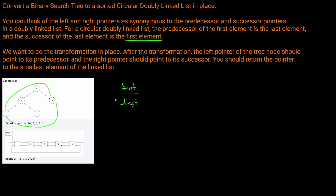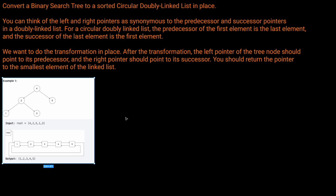We need to have the first and the last elements available to us at all times. When the traversal finishes, the node we're currently working with is the last node, but if we don't track the first node, we'll never be able to link it or return it. So the algorithm is quite simple: we initialize our variables — f (first) equals None, and l (last) equals None — and then we perform the in-order linking.